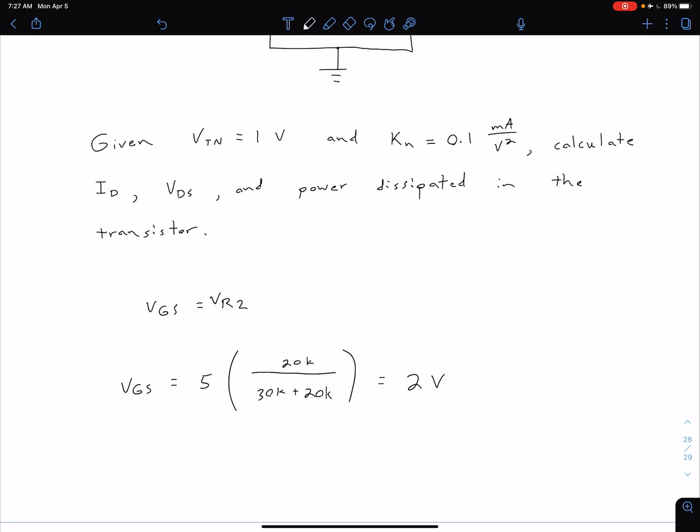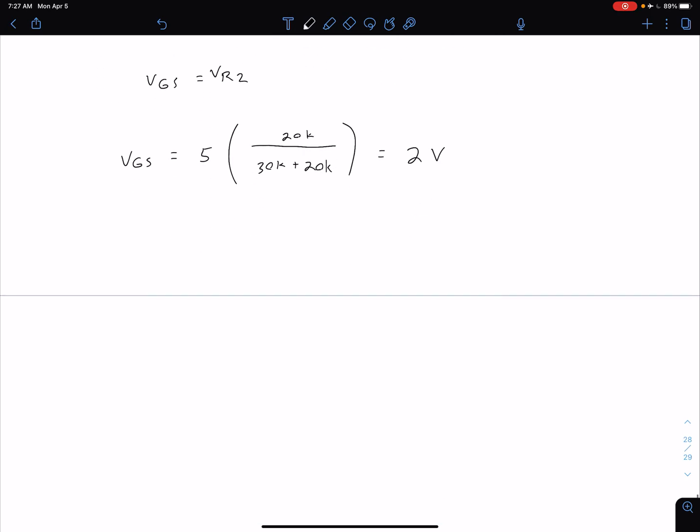So we can see then we can compare that to our threshold voltage of 1. So in this case, our VGS is greater than our threshold voltage VTN, which means our device is not cut off. So we're not operating in the cutoff region, which is good, because that wouldn't be very interesting in terms of our analysis.